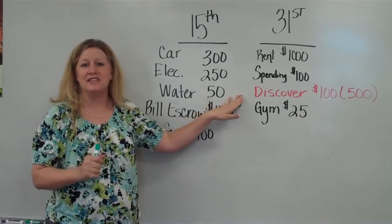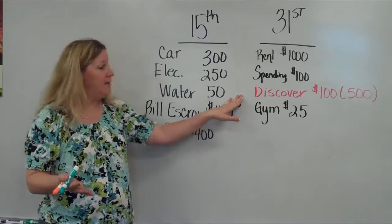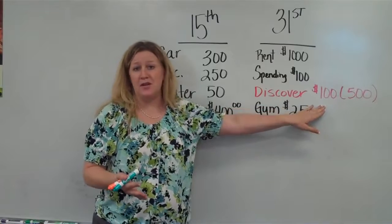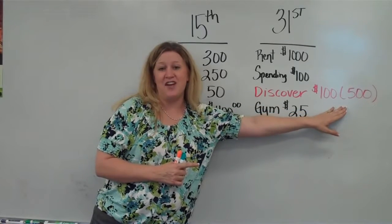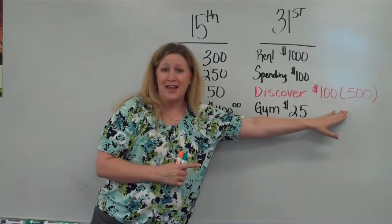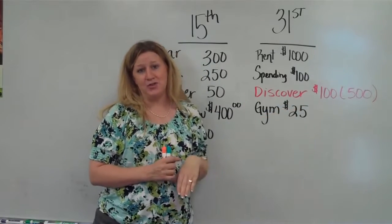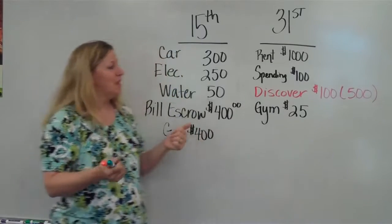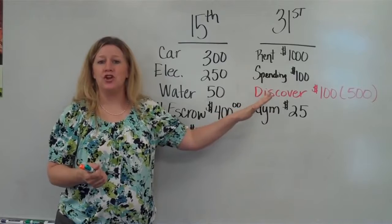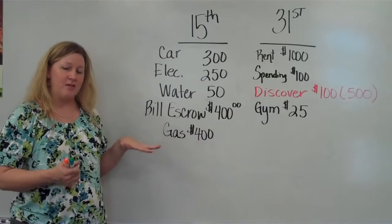But you notice in red I have the Discover card listed. It's a debt I'm trying to pay off, let's say. So my monthly payment is going to be $100, as you can see. And then over here in parentheses is $500. That's the balance that I still owe on the Discover after I've paid my $100 minimum payment or payment a month. So that's why you can keep a really good track of your debt and what you owe within your monthly budget.